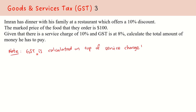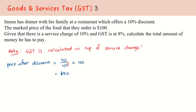Now let's begin looking at the question. It says that Imran has dinner with his family at a restaurant which offers a 10% discount. The marked price of the food they order is $100. Given that there is a service charge of 10% and GST is at 8%, we want to calculate the total amount of money he has to pay. We always consider the discount first: 90% of $100 gives us $90 as the price after discount.